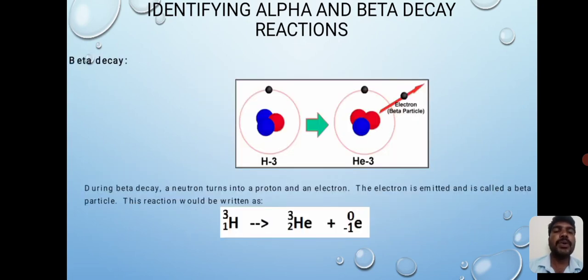Beta decay. During beta decay, a neutron turns into a proton and an electron. The electron is emitted and is called a beta particle. The reaction is written below.